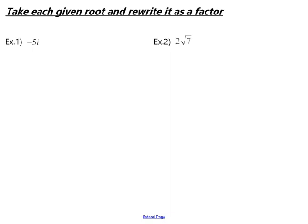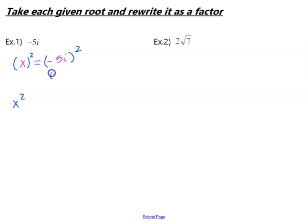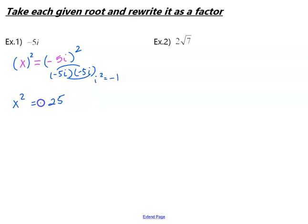Let's practice that a couple more times. Let's take each root and rewrite it as a factor. In example 1, first we set x equal to negative 5i. Next, we put each side in parentheses before we square it. The left side is still just x squared. But on the right side, that's really negative 5i times negative 5i. Negative 5 times negative 5 gives us positive 25, but i times i is i squared, and i squared equals negative 1. So when you combine those two parts, we actually get negative 25.